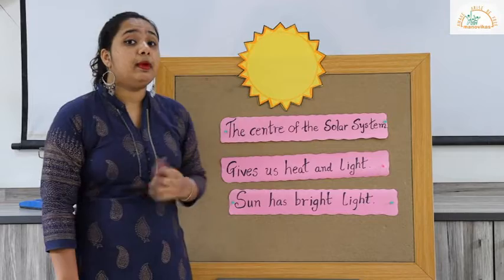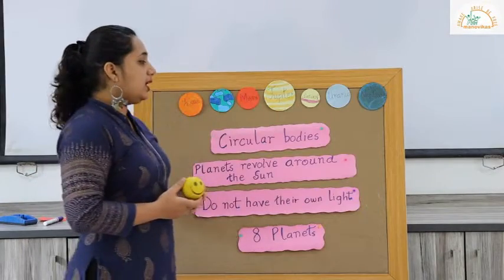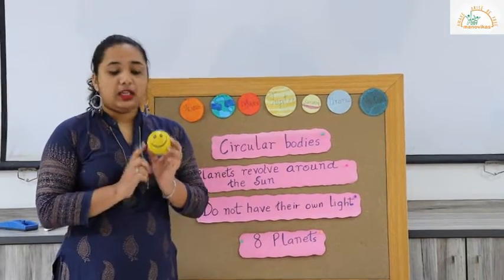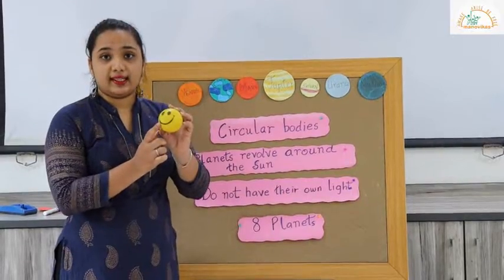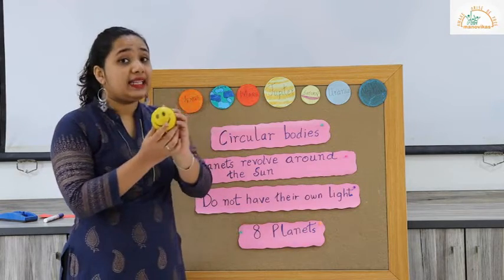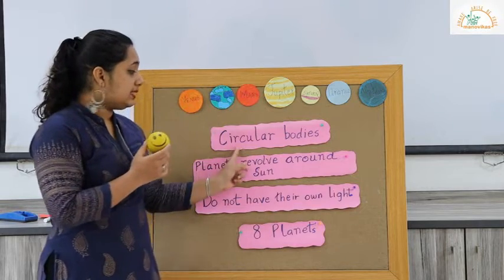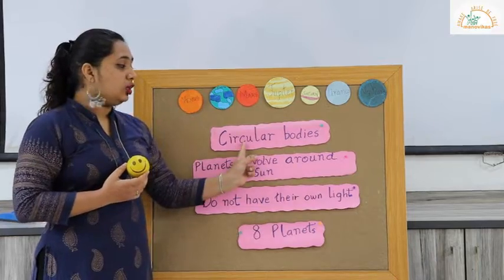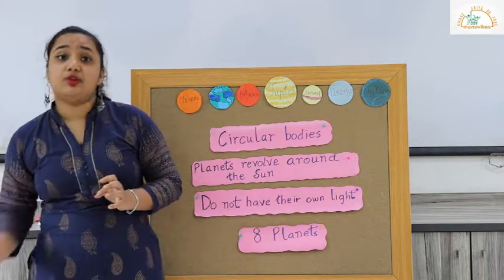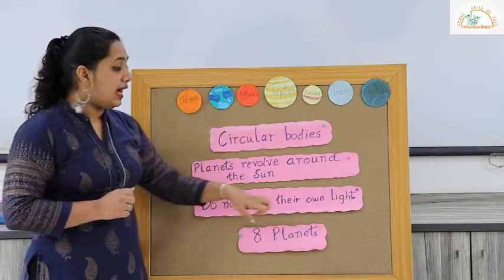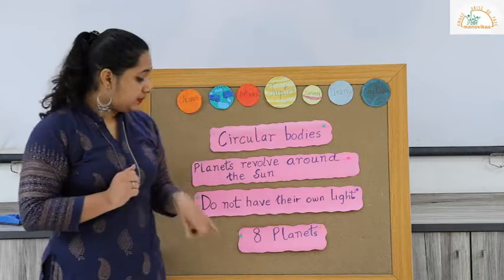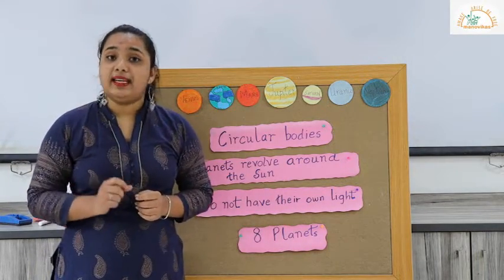And let us learn about the other members of the solar system — they are the planets. Planets are circular bodies. What can you see in my hand? It is a smiley ball. Now what is the shape of a smiley ball? It is round on all the sides. So any object that is round on all the sides is also called circular in shape — that is the reason they are called circular bodies. Planets revolve around the sun. They do not have their own heat and light. The sun's light reflects on the planets and as a result they look a little bright. And there are altogether eight planets in the solar system.